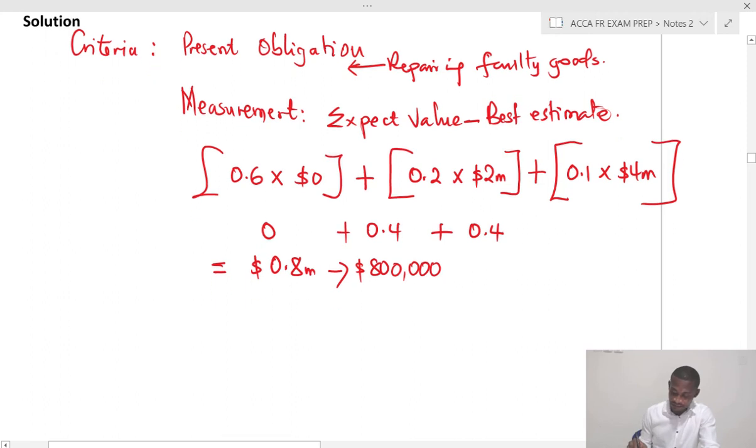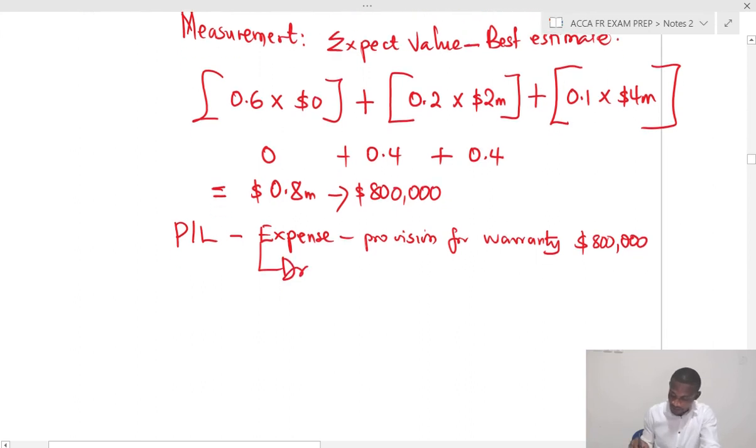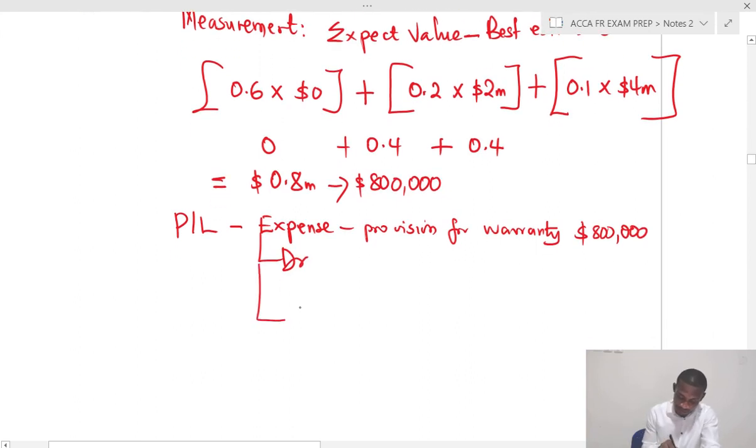So it means that in the year end in P&L, they will expense provision for warranty. So here, it's a debit. And because of provision, which is a liability, credit provision for warranty, 800,000.